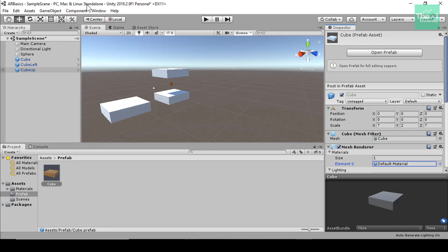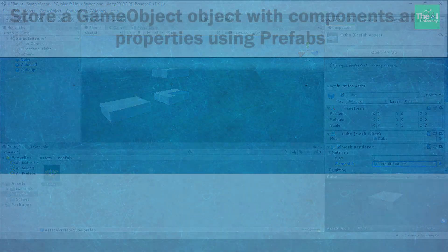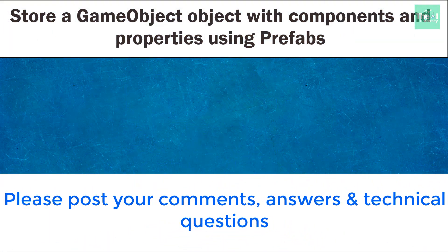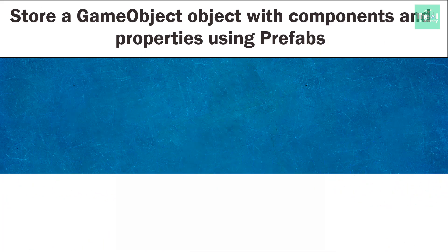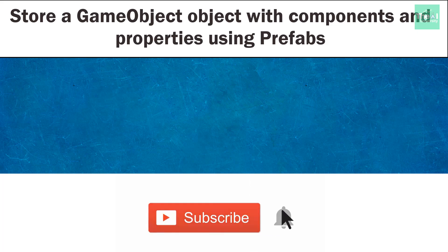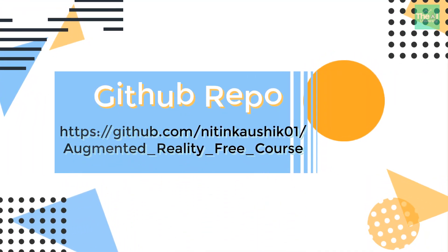To conclude, I explained what a prefab is and how to make use of it in Unity to change the properties of several game objects at once rather than making edits in each copy one by one manually. Here is today's question: why do we create prefabs in Unity, and what are the benefits? Please post your answers in the comment section below. You can also post technical questions and I will try to answer them. If you are not already a subscriber, click that subscribe button, and if you have subscribed, click the bell icon to receive notifications whenever I release a new video. Thanks for watching — I will be covering the next topic in the upcoming video, so keep watching. Thank you.